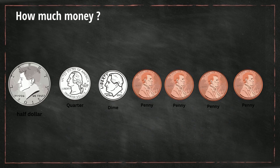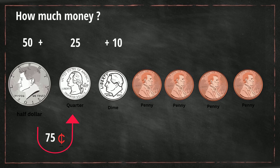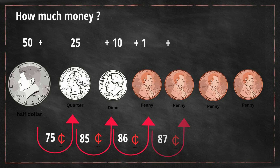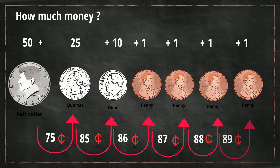We have another half dollar which is 50 cents, and then a quarter which is 25 cents, so now we have 75 cents. And then a dime which makes it 85 cents. And then we have four pennies — so 85 plus one is 86, plus another penny is 87, then another penny is 88, and a fourth penny is 89. So it is 89 cents.